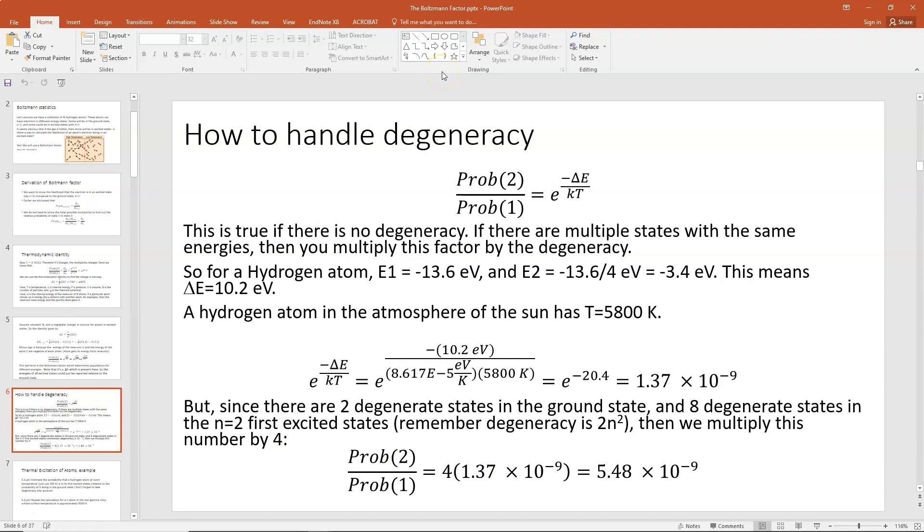Okay, so let's do an example and then let's talk about how to handle degeneracies. So here we have this relative ratio: probability of state 2 versus probability of state 1 is equal to our Boltzmann factor, e to the negative delta E over kT. This straight equation is true if there's no degeneracy. But if there are multiple energy states that have the same energies, multiple states in the same energy, so for example, in the review of atomic structure, we talked about how in the ground state, n=1, l=0, m_l=0, and then you have spin up and spin down in that state, which means it's got a degeneracy of 2. There's two electrons that could be in that same state. So if that's the case, if you have a degeneracy, then you multiply your Boltzmann factor by the degeneracy of the state.